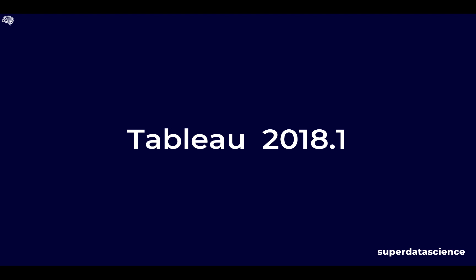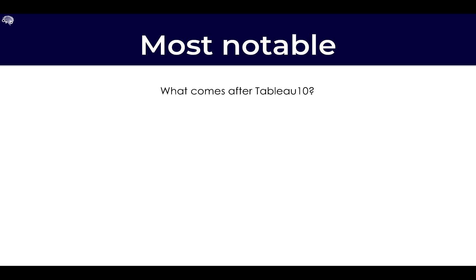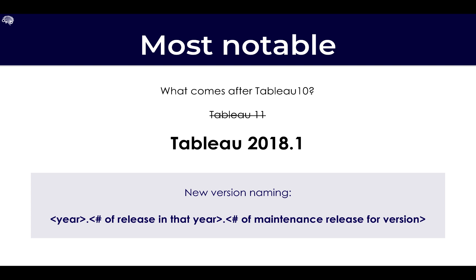The most notable change coming is not a functionality change — you might expect Tableau 11 after Tableau 10, but that's not the case. They have changed the way versions will be named going forward. The new naming convention uses the year, dot, the release number in that year, and a further dot for the maintenance release of that version.